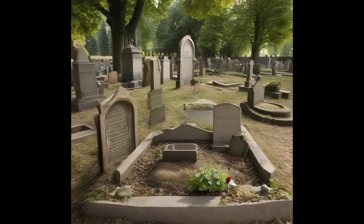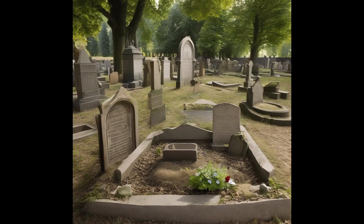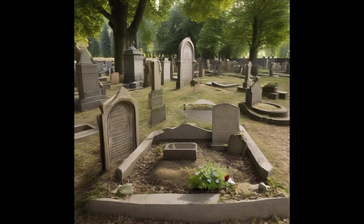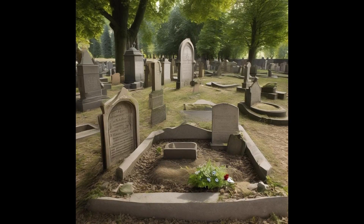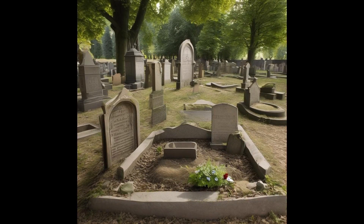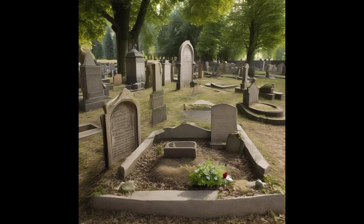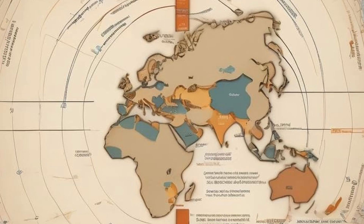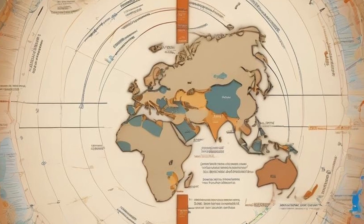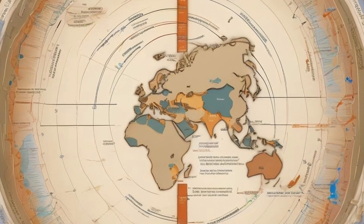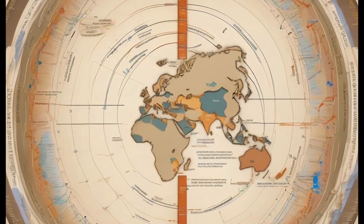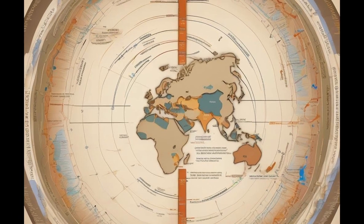Ashkenazi-Jewish Connections: The remains found in Erfurt and Chapel Field indicate a connection to Ashkenazi heritage, and the historical context, especially surrounding events like the Norwich Massacre, reflects the tumultuous history of Jewish communities in medieval Europe.